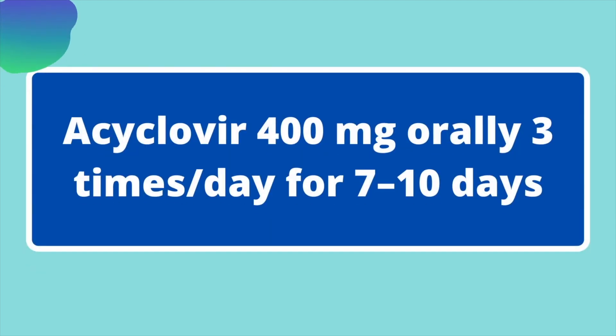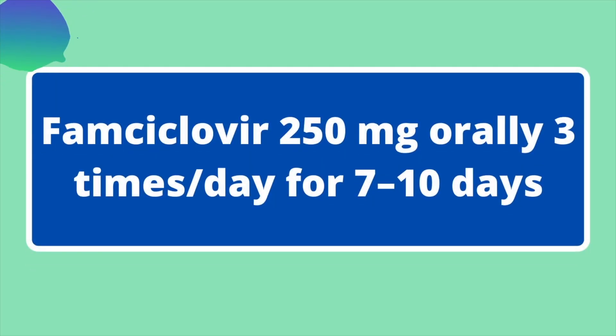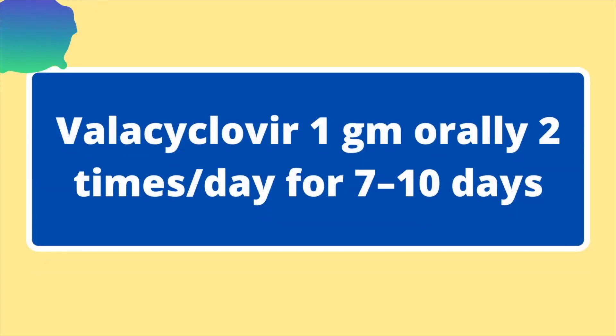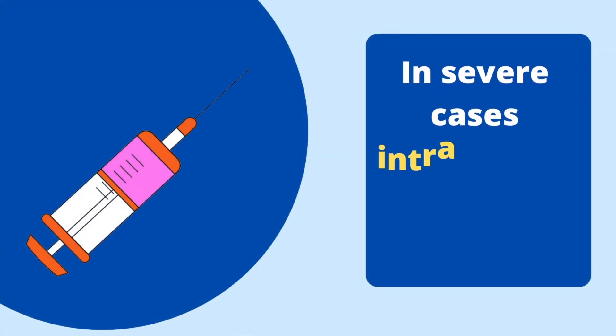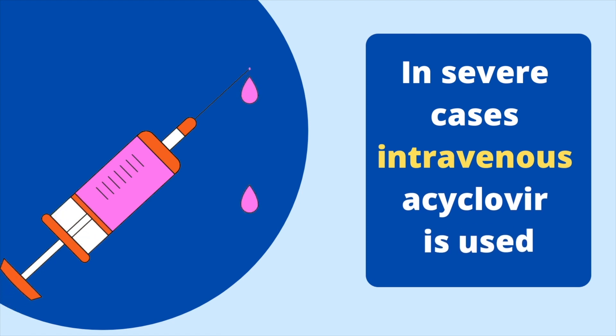For genital herpes, acyclovir 400mg orally 3 times a day for 7–10 days can be prescribed, or famciclovir 250mg orally 3 times a day for 7–10 days, or valacyclovir 1g orally 2 times a day for 7–10 days. Treatment can be extended if healing is incomplete after 10 days of therapy. In severe cases or infections not responding to oral therapy, intravenous acyclovir is used.